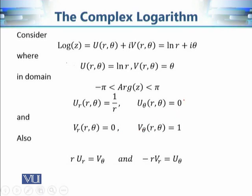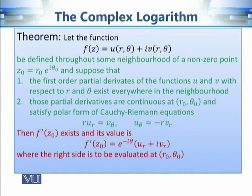These partial derivatives are always continuous, and the requirement that r ≠ 0 corresponds to z ≠ 0, which is automatically satisfied since log is not defined at z = 0. So for every point on the domain these conditions are satisfied. Both the first and second Cauchy-Riemann conditions hold, so we can compute the derivative of this complex valued function.